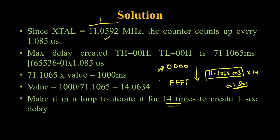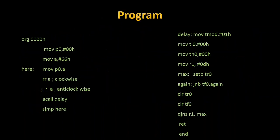We have already done this timer program — please go to that video; the link is in the description. Understand clearly how it was done and then come back to this program. In this program, P0 is configured as the output port. A register receives the value of P0, so P0 will be activated as the output port and we supply data to it.